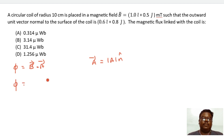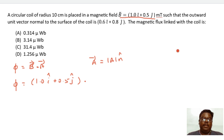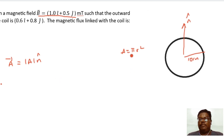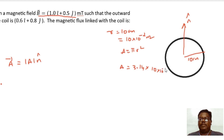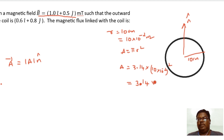The magnetic field B is given by 1.0î + 0.5ĵ. The radius of the circular coil is 10 centimeters. Converting to meters, r = 10×10⁻² meters. The area is given by A = πr² = 3.14 × (10×10⁻²)² = 3.14×10⁻² m².